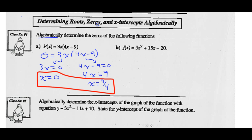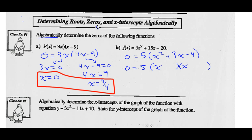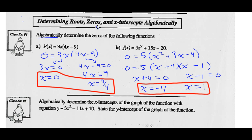Find the zeros of f(x) = 5x² + 15x - 20. Let f(x) = 0 and factor out the common factor of 5, leaving x² + 3x - 4. Factor that simple trinomial: what numbers multiply to -4 and add to 3? That's +4 and -1. So 0 = 5(x + 4)(x - 1). Set each factor equal to 0: x + 4 = 0 or x - 1 = 0, giving x = -4 or x = 1. Those are the zeros of the polynomial function f(x).